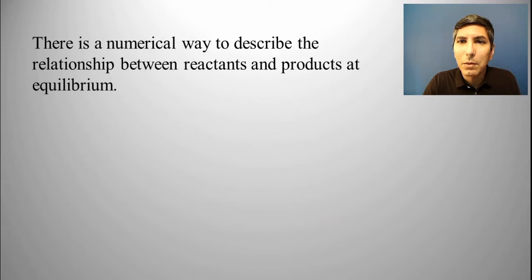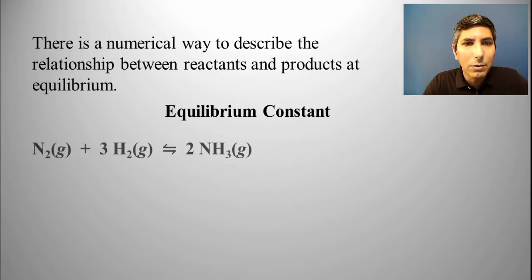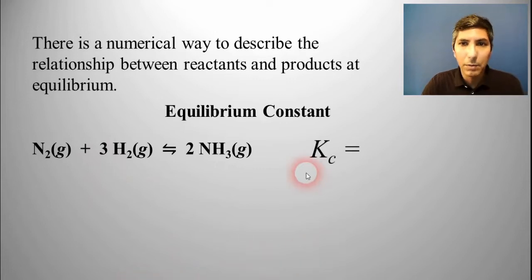This is about something we call the equilibrium constant. This is a numerical way to talk about the relationship between reactants and products at equilibrium. The way you calculate the equilibrium constant for a reaction is you basically take the concentrations of the products over the concentrations of the reactants multiplied by each other, and then you raise that to the power of the coefficient.